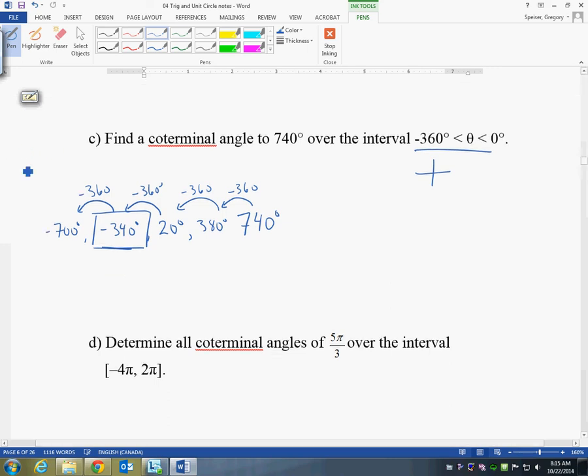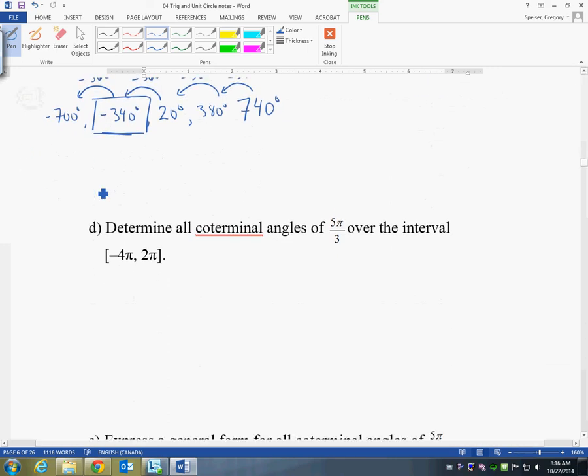For part D, determine all coterminal angles of 5π/3 over the interval of negative 4π and positive 2π. All right, so the same strategy here. I'll write 5π/3, and I'm going to be either adding or subtracting to it, and I'll be paying attention to my interval. I should probably change my 2π and write this as something over 3. So I need to multiply that by 3, so this is the same thing as 6π/3. So I'll be adding and subtracting 6π/3.